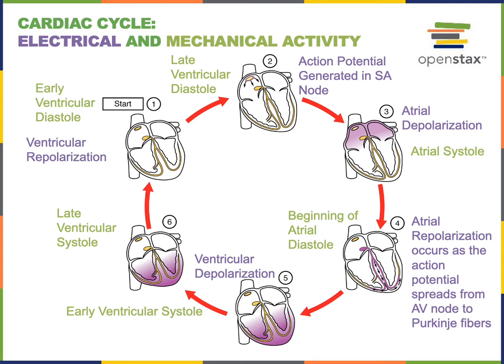We start with the action potential generated in the SA node, spreading throughout the atria and causing atrial depolarization. That depolarization is the stimulus that triggers contraction of the atria, known as atrial systole. Atrial contraction, or atrial systole, forces blood from the atria down into the ventricles.